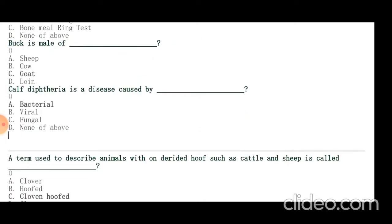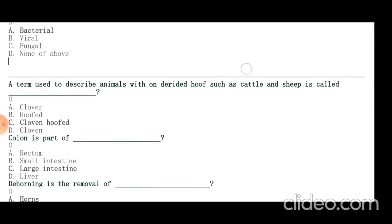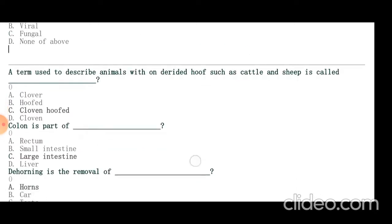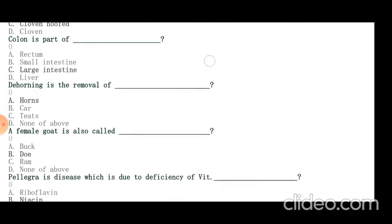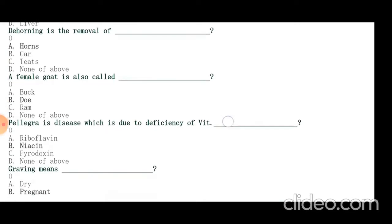A term used to describe animals with a divided hoof, such as cattle and sheep, is called cloven hoofed. Colon is part of large intestine. Dehorning is the removal of horns. Female goat is also called doe.